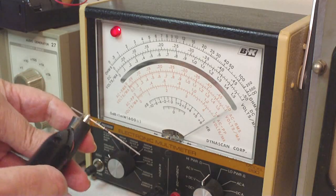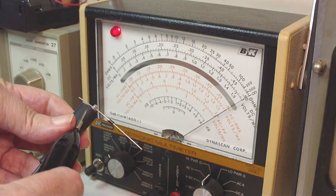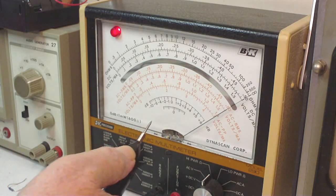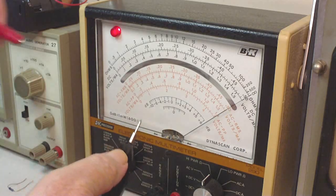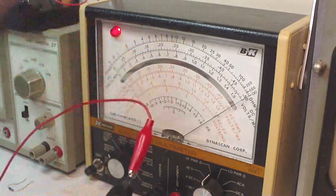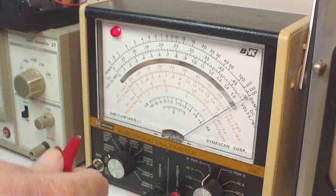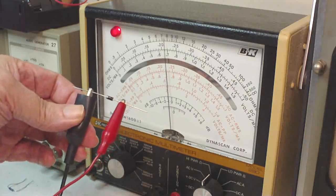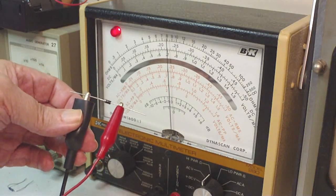So that means that this is negative and this is positive. So what I'm going to do is I'm going to use a red alligator clip lead to mark which side is positive and which side is negative.